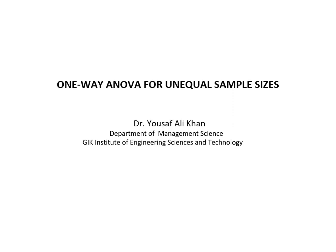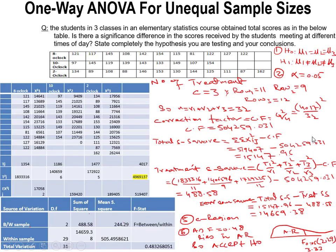I will show you manually how to handle such questions — how to calculate the F-statistic and then check whether all those sample means are equal or not equal, and whether you should accept or reject the null hypothesis. The question: students in three classes in an elementary statistics course obtained total scores as shown in the table below. Is there any significant difference in the scores received by students meeting at different times of day? State completely the hypothesis you are testing and your conclusion.